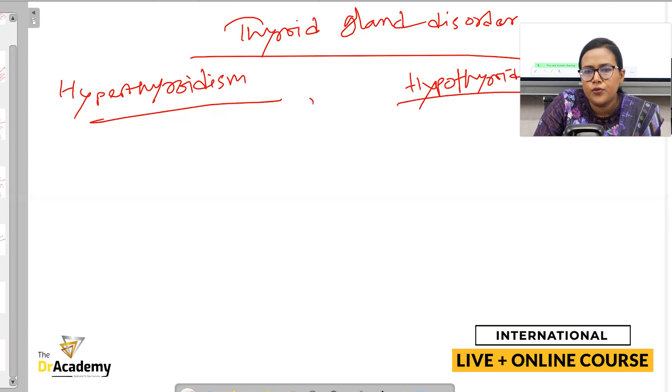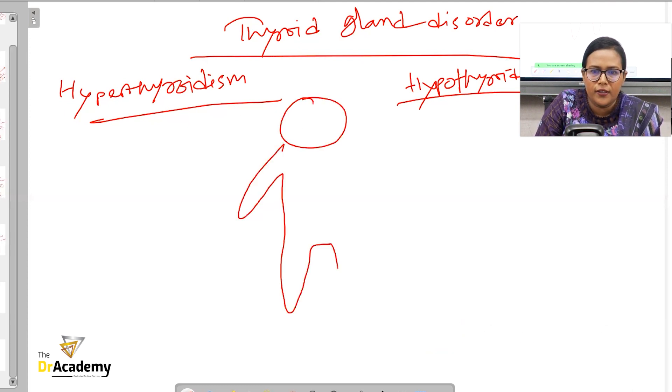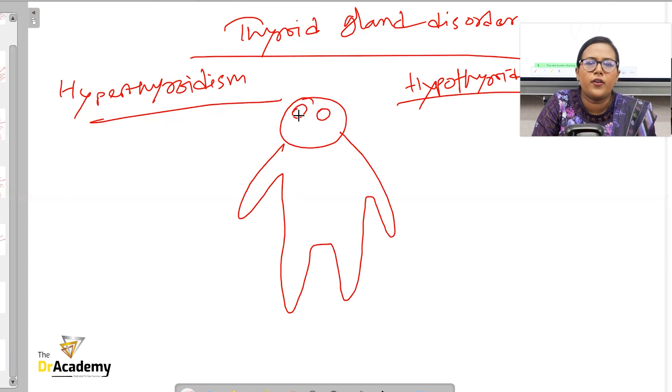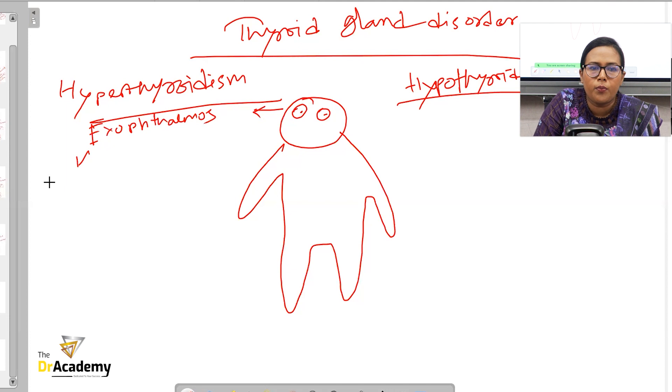So I always try to draw a diagram and then remember. If this is a human body, why have I drawn these very big eyes? That has a reason. Exophthalmos, thyroid eye disease, very good. So the commonest presentation is exophthalmos, which can lead to visual problems. We'll just try to give it two hairs or something like that. So it can also cause thinning of the hair.